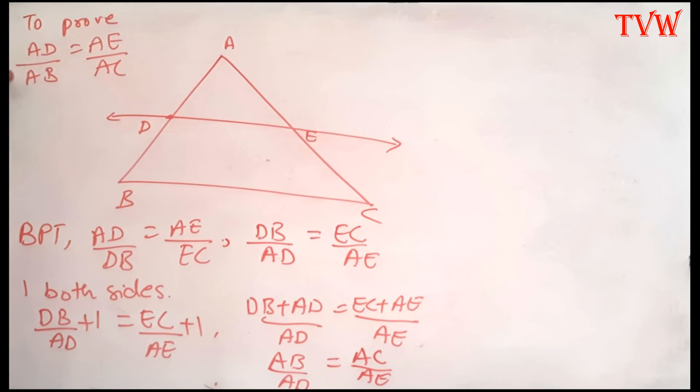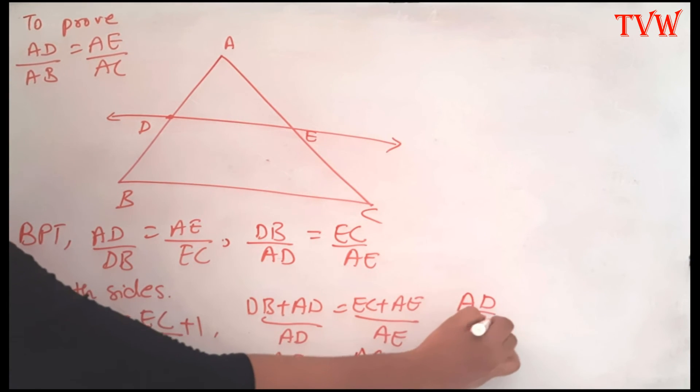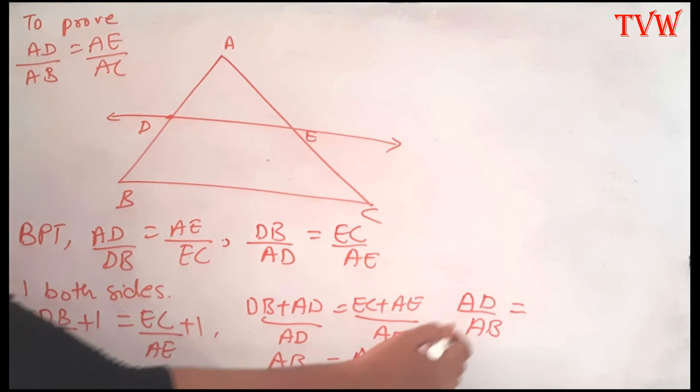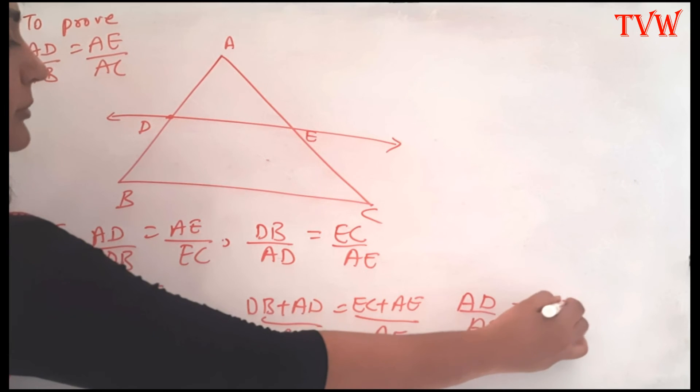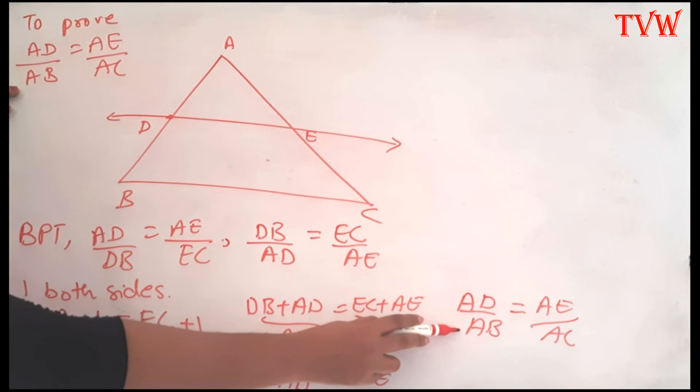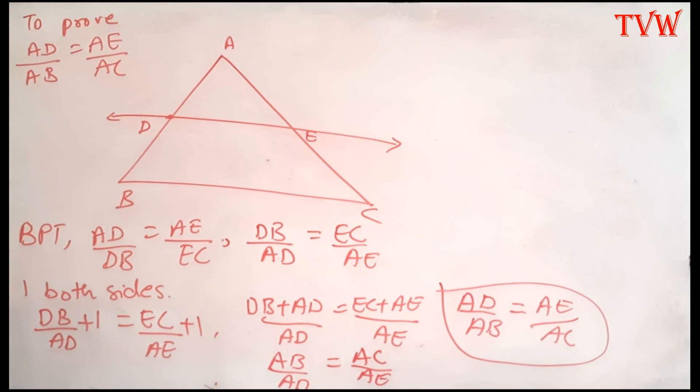Now, what do I need? I need AD divided by AB. Here I have AB divided by AD. So if I take the reciprocal of this, let's see what happens. If I take the reciprocal of AB divided by AD, that is AD divided by AB equals the reciprocal of AC divided by AE, which is AE divided by AC. Did I prove what I needed to prove? AD divided by AB is equal to AE divided by AC. Thus proved.